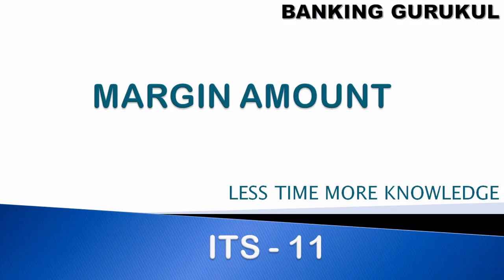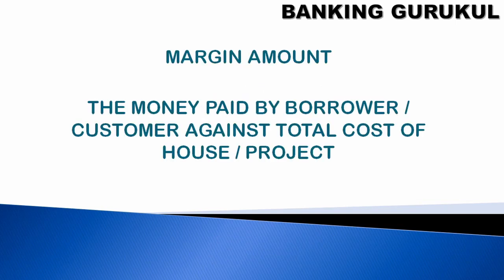Today we'll discuss margin amount. What is margin amount? The money paid by the borrower or customer against the total cost of a house or project is called margin amount. For example, you want a housing loan and you are building a house, so the total cost is 50 lakhs.